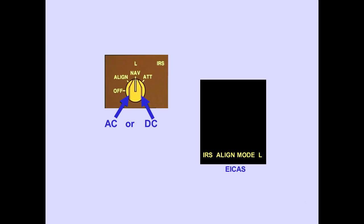If power is restored, the EICAS memo message, IRS align mode, is displayed. Remember, while in motion, the IRS cannot realign.